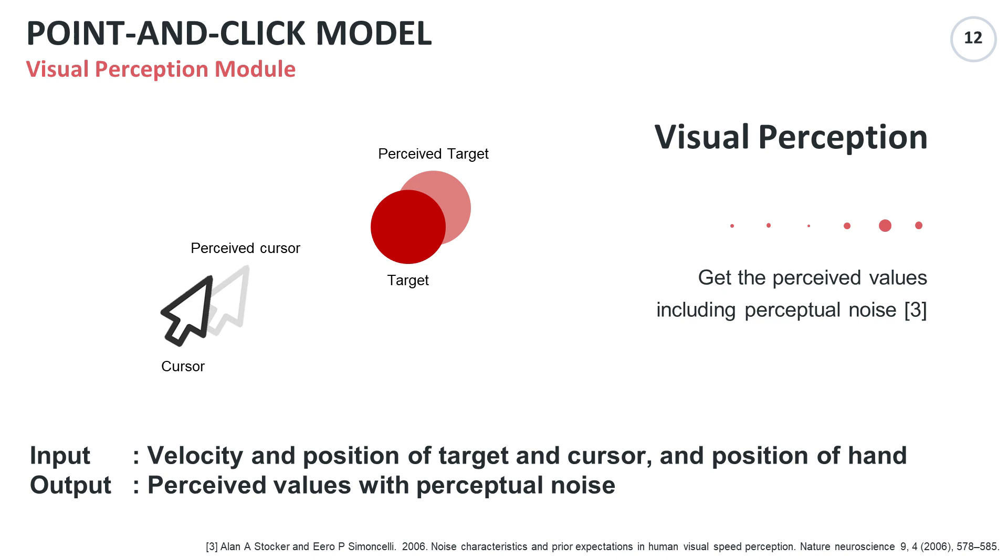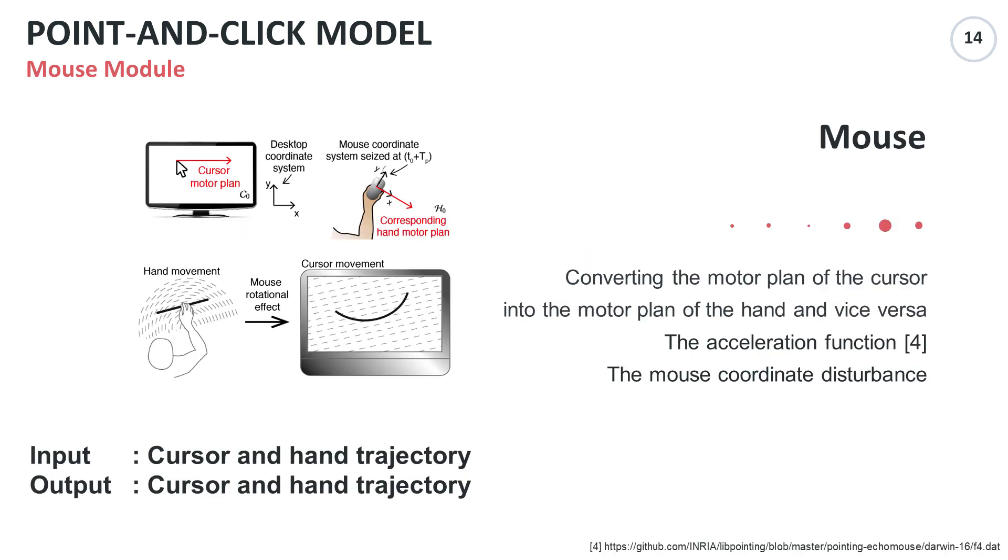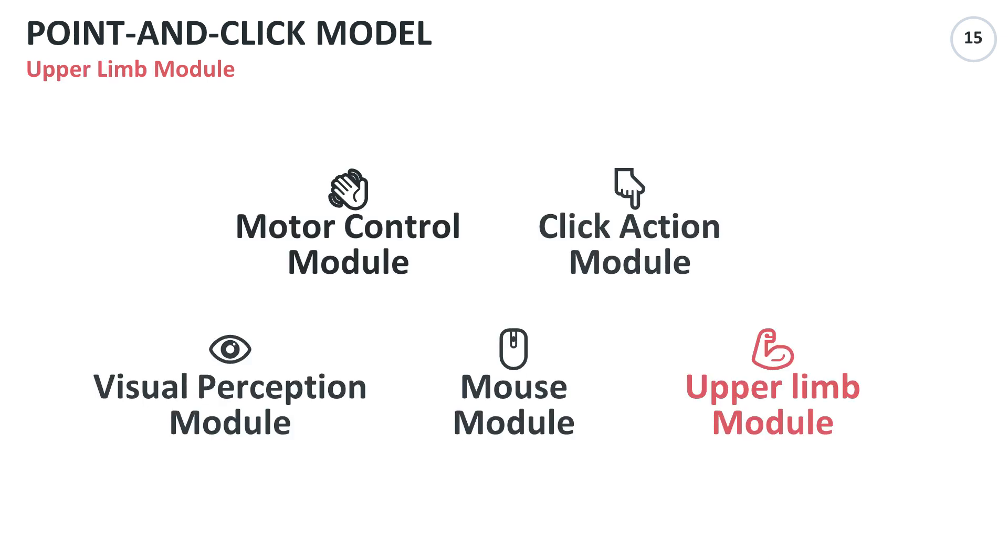The fourth one is the mouse module. The mouse module simulates the process of converting the motor plan of the cursor into the motor plan of the hand and how the cursor will move when the motor plan of the hand is executed.